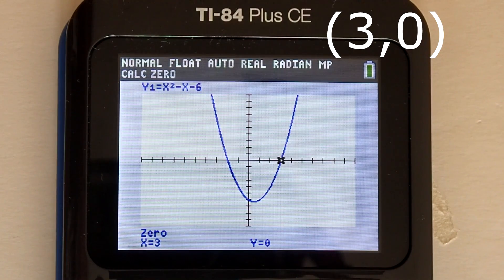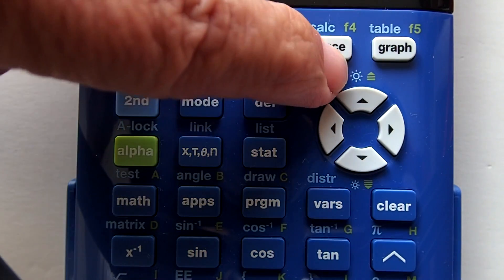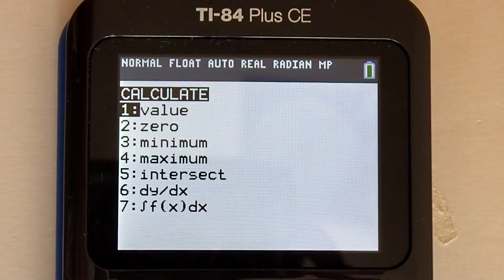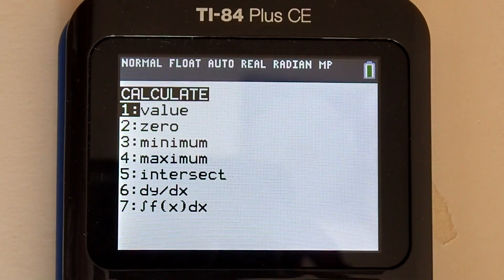Now I am going to show you an easy way to find the y intercept. Press the second key. Then the trace key. This calculate window appears. Select one, value. Press enter.